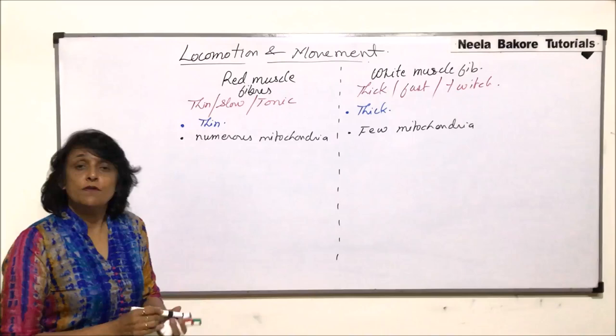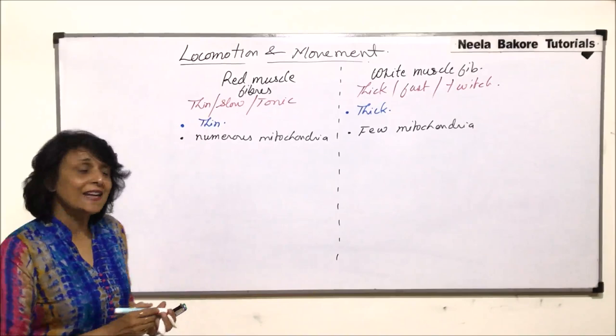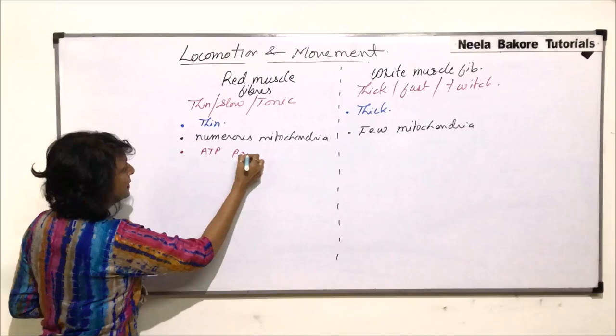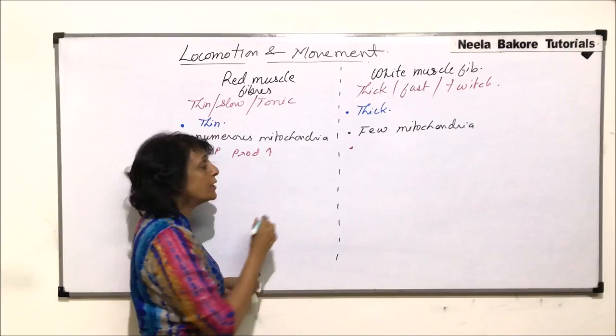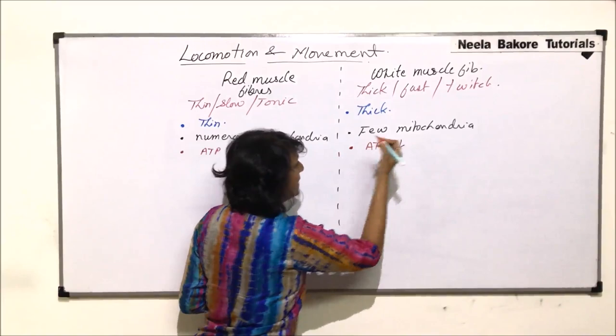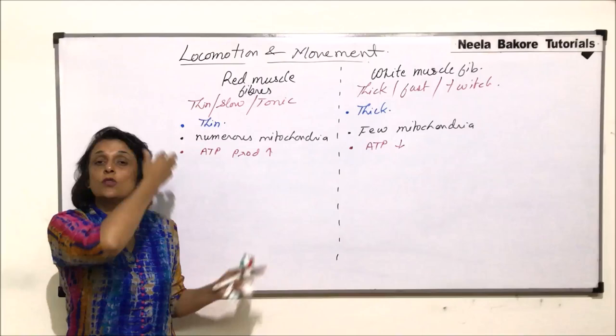We know the function of mitochondria — they are responsible for production of ATP. So in red muscle fibers, ATP production is high because the mitochondria, the organelles which help in this process, are present in large numbers. Whereas in the case of white muscle fibers, ATP production is very less.